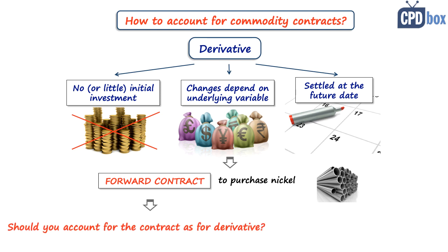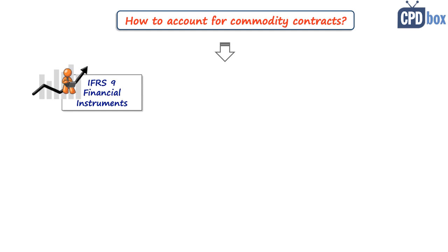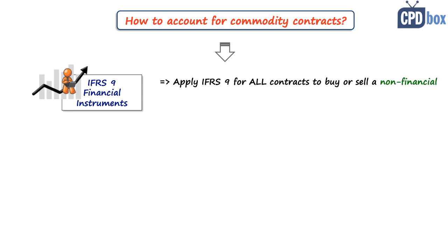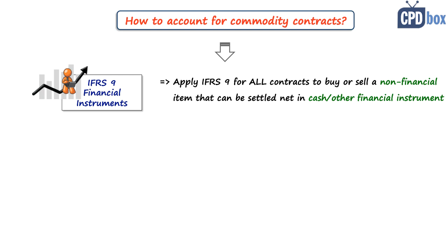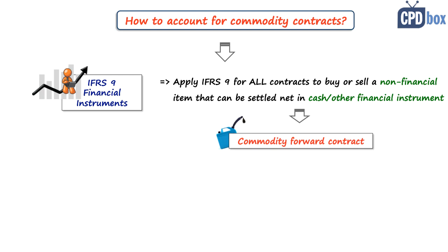But the question is, should you account for this contract as a derivative? Should you apply IFRS 9? Well, the answer will not surprise you — it depends. IFRS 9 says, more specifically in paragraph 2.5, that you have to apply IFRS 9 for all contracts to buy or sell a non-financial item that can be settled net in cash or in another financial instrument. So yes, this would mean that Lee would have to account for this order of nickel as a derivative, because the contract said the buyer can settle the difference between agreed price and market price in cash.